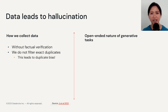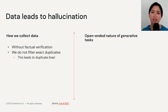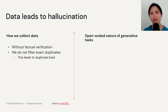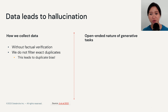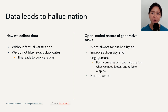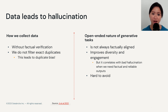The other problem regarding data is actually about how open-ended these generative tasks are. In a chat application, we want the chatbot to be more engaging, which means we expect more diverse responses. If the chatbot always repeats the same things when asked the same question, we won't use it for very long. So we want more diversity to improve engagement, but this type of diversity can also correlate with bad hallucinations, especially when we need factual and reliable output.